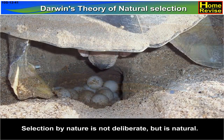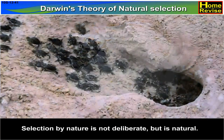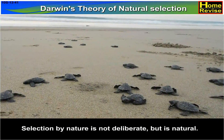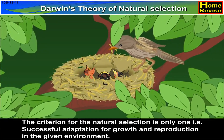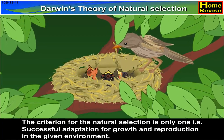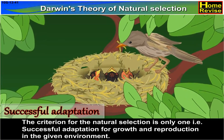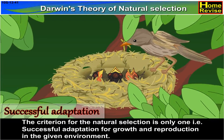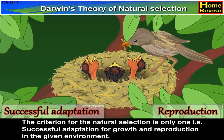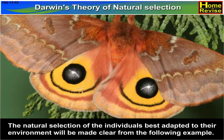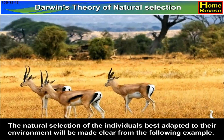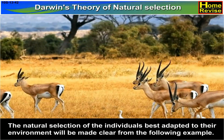Selection by nature is not deliberate, but is natural. The criterion for natural selection is only one: successful adaptation for growth and reproduction in the given environment. The natural selection of individuals best adapted to their environment will be made clear from the following example.